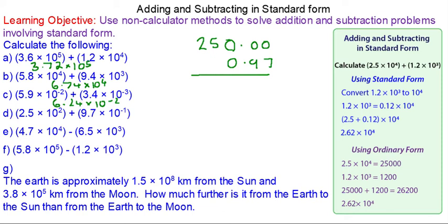The addition is 250.97. Converting to standard form: 2.5097 × 10². We're moving it two places, times 10 to the 2.